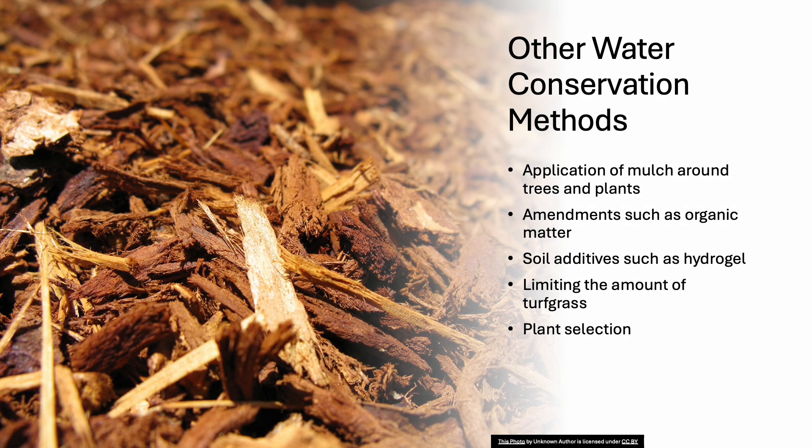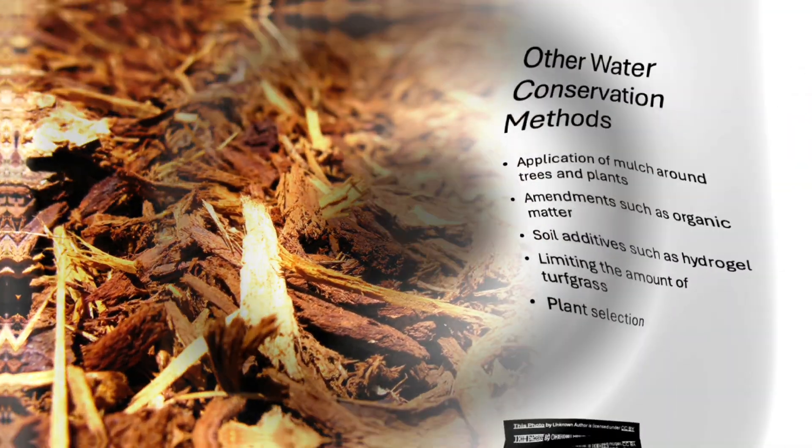Additional methods for water conservation include applying mulch around trees to retain moisture, using soil amendments like organic matter, and selecting plants that are adapted to the local conditions.